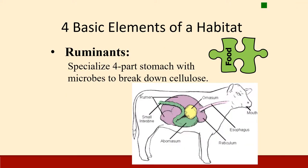Ruminants are the next type of animal we'll discuss. Ruminants have specialized four-part stomachs with microbes that break down cellulose. It starts with enlarged fermentation organs — the reticulum and the rumen — which house bacteria and protozoa that break down cellulose into volatile fatty acids, or VFAs, which can then be used as energy. These organs are before the intestine where nutrients are absorbed, so ruminants not only get energy from breaking down cellulose but can also utilize the bacteria and protozoa as a source of protein when they die.